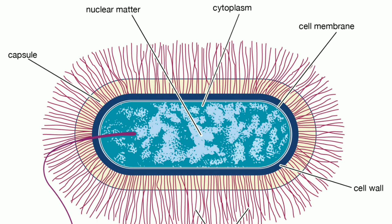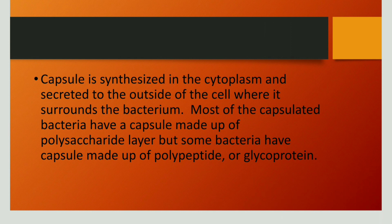This diagram shows a bacterial cell. A bacterial cell has a polysaccharide layer that stands outside the cell envelope and this layer is called the capsule. These capsules are synthesized in the cytoplasm and from the cytoplasm they go out and surround the bacteria. These capsules are generally made up of polysaccharides, but in some capsulated bacteria these capsules are made up of polypeptides or glycoproteins.